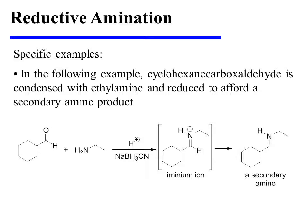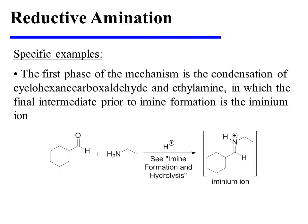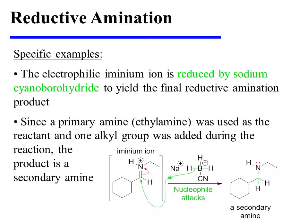In the example shown on this slide, cyclohexane carboxaldehyde is condensed with ethylamine and reduced to afford a secondary amine product. The first phase of the mechanism is the condensation of the aldehyde with ethylamine, and during this condensation the final intermediate prior to amine formation is the aminium ion. The electrophilic aminium ion is reduced by sodium cyanoborohydride to yield the final reductive amination product. Since a primary amine was used as the reactant and a single alkyl group was added during the reaction, the product is a secondary amine.